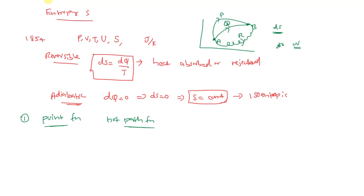Next, entropy is an extensive variable. Extensive variable means the value of entropy depends upon the amount of matter in the system — the amount of matter or number of moles in the system.